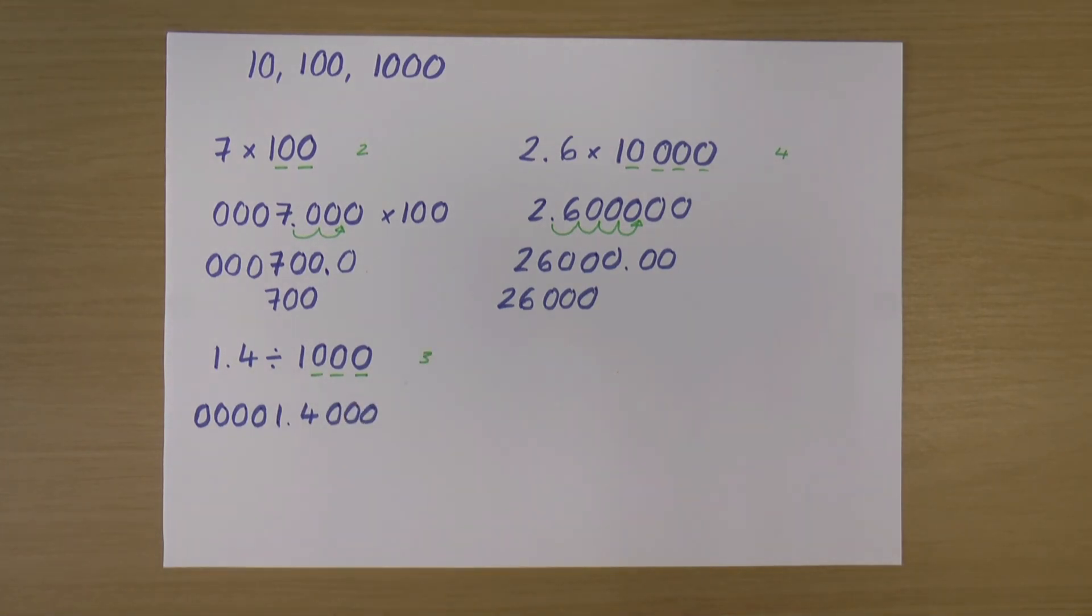And so I'm going to move my decimal point 3 places to the left. So 1, 2, 3. So that gives me... I'll write that out again with my decimal point moved. It gives me this, which is 0.0014.